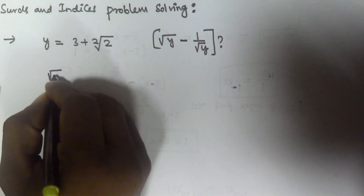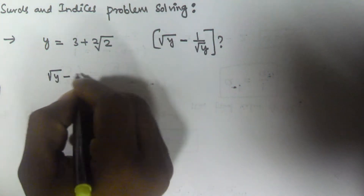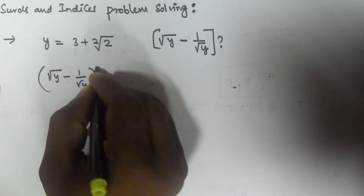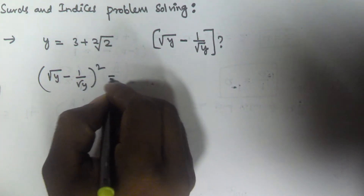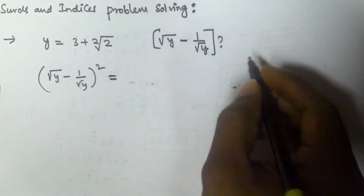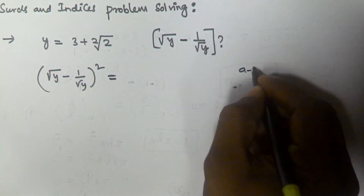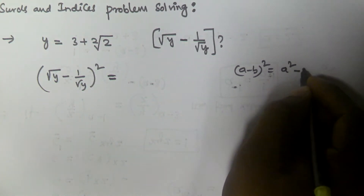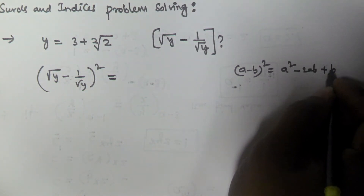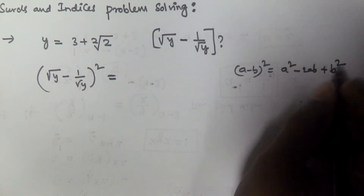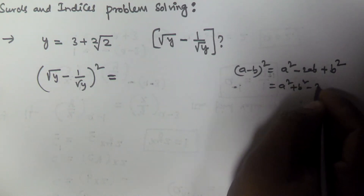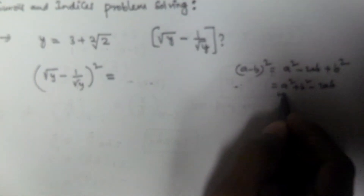So we consider root y minus 1 by root y, squared, which equals a minus b whole square. The formula is: a minus b whole square equals a square minus 2ab plus b square, or equivalently a square plus b square minus 2ab.